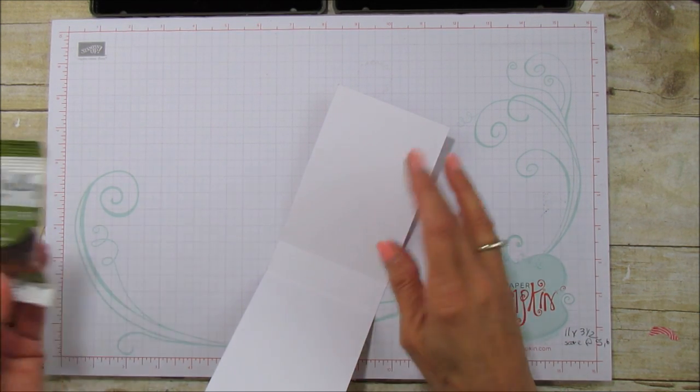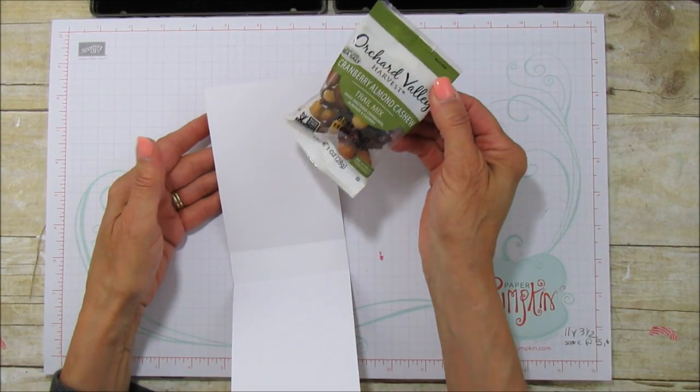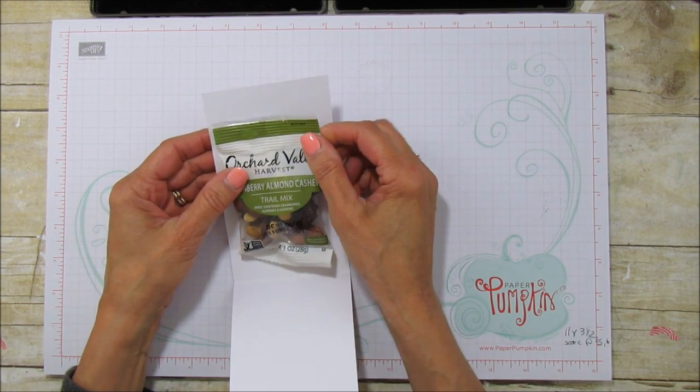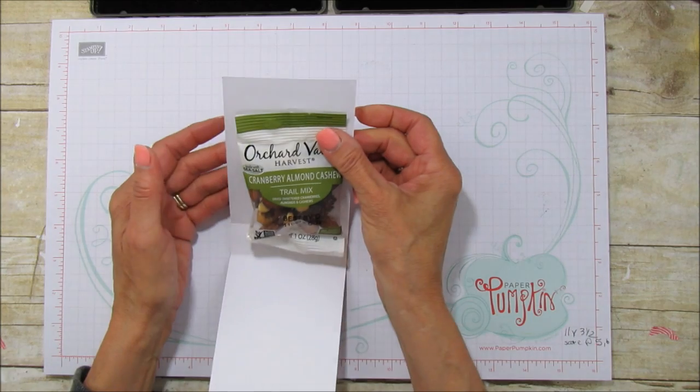Anything that's like three, three and a half inches wide will fit in there. I'm using these little trail mix because I thought that'd be really cute to put on someone's bench for like a little snack.